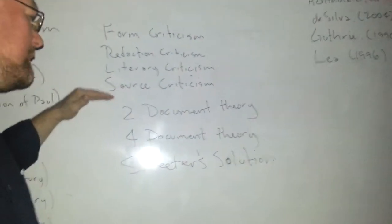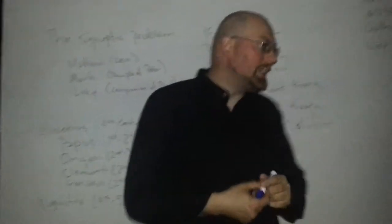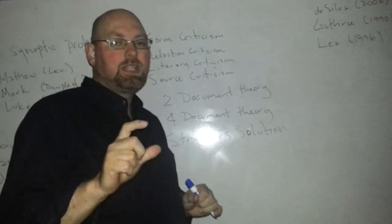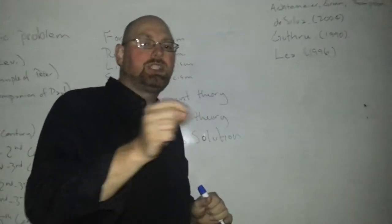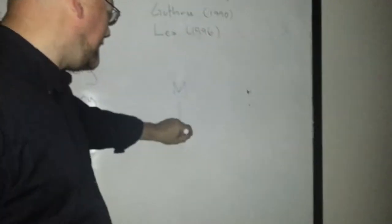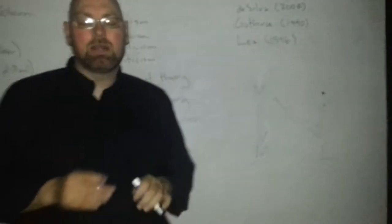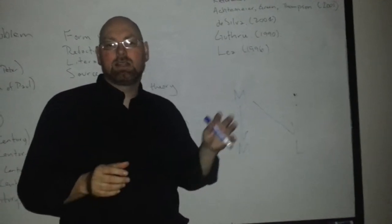Now part of that source criticism comes out, and we have what's called the two-document theory, the four-document theory, and Streeter solution to the synoptic gospels and where this information came from. The idea is, what they say is, because Mark is the shortest, the shortest had to be the first, and because Matthew and Luke look so much like Mark, that Mark had to be the first one. And so we start off right here. Then we have the gospel of Mark that influenced the writings of Matthew and the writings of Luke. But then the question comes along and says, but wait a second, why are there other parts of Matthew and Luke that Mark doesn't include?